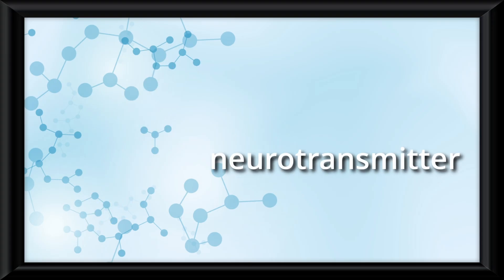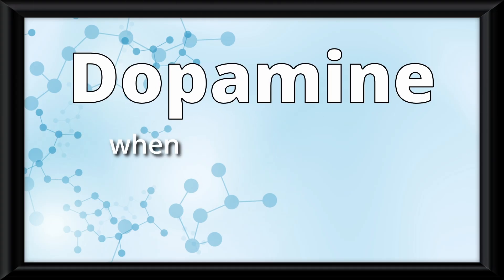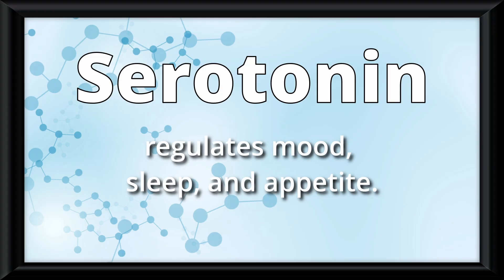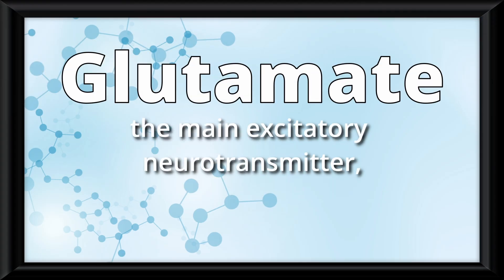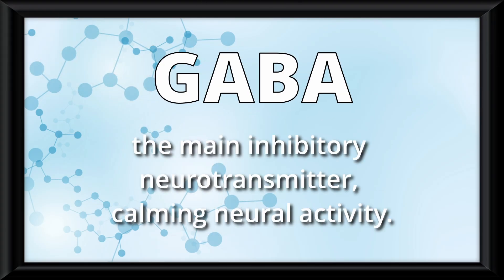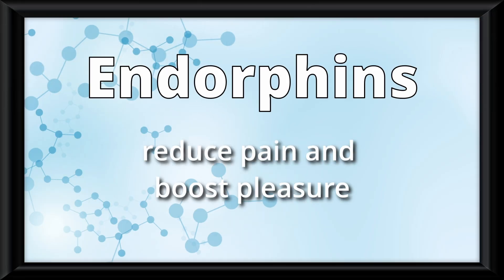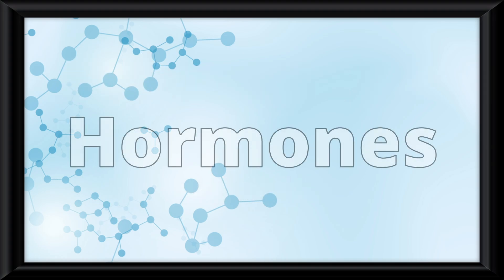The signal releases a neurotransmitter. Different neurotransmitters are sent based on the situation. Dopamine is for reward, motivation, or movement. Serotonin regulates mood, sleep, and appetite. Norepinephrine increases alertness and arousal. Glutamate is the main excitatory neurotransmitter, important for learning and memory. GABA is the main inhibitory neurotransmitter, calming neural activity. Acetylcholine enables muscle movement and memory. Endorphins reduce pain and boost pleasure. And substance P carries pain messages to the brain. Hormones are similar to neurotransmitters, except they travel through the bloodstream, so they're slower and longer lasting.